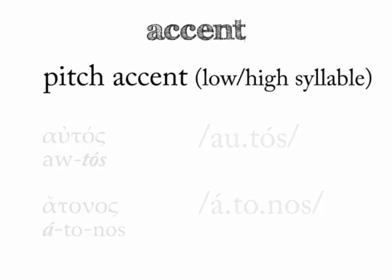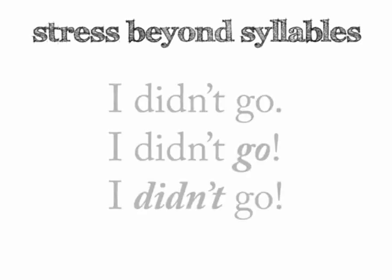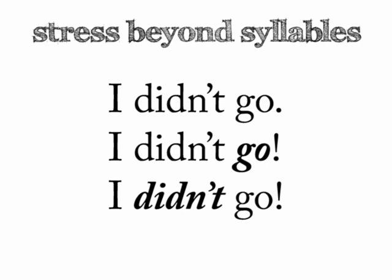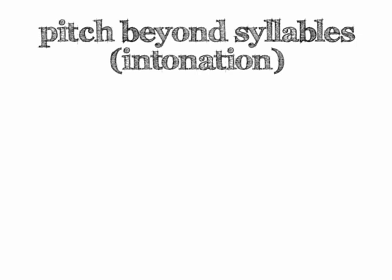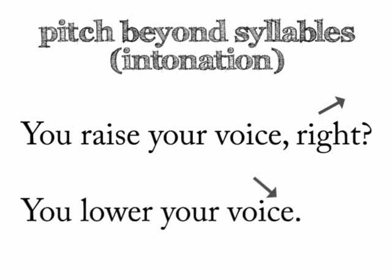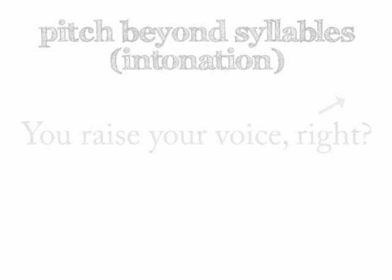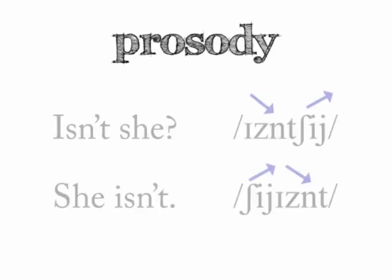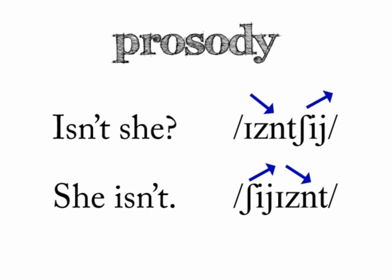We've been applying these features at the level of syllables and words. What if we apply those features, as languages routinely do, to the level of utterances and sentences? We can see that we use stress in English to differentiate 'I didn't go' versus 'I didn't go' versus 'I didn't go' — using stress to convey emphasis or to nuance the meaning. We can consider intonation similarly. English speakers regularly use intonation at the level of a sentence to ask a question — you raise your voice at the end of a sentence to ask a question, right? And intonation lowers at the end of a typical statement. This is prosody: the application of features like intonation and stress at the level of an entire phrase or utterance, rather than at the level of a single phoneme or syllable.